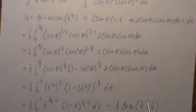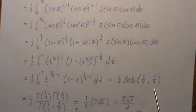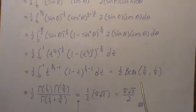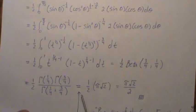And this looks like the beta function, right? That's exactly this form. So it's 1/2 beta of 3/4 and 1/4.